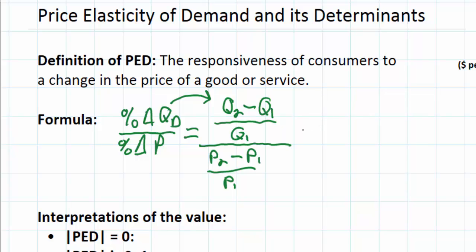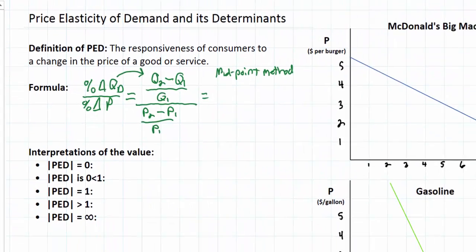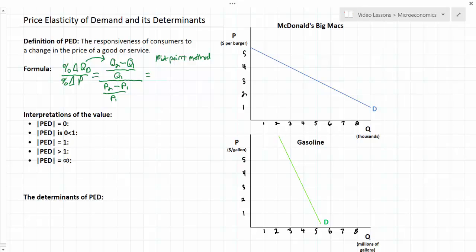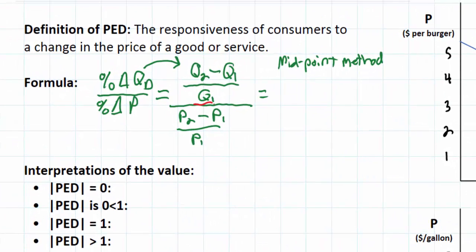Some of you may be in a class that requires the midpoint method of calculating PED. The midpoint method gives us a more accurate result when we calculate price elasticity of demand between two prices. It looks quite similar to the regular method except we replace Q and P with the average quantity and the average price between Q1 and Q2 and between P1 and P2.